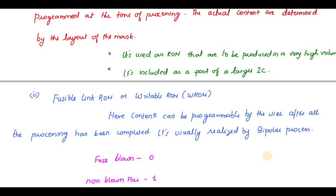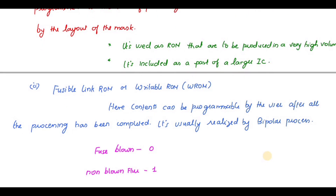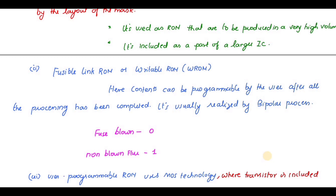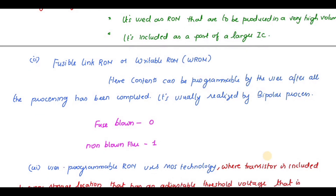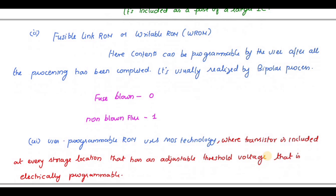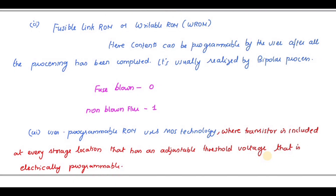Next is Fusible Link Read-Only Memory, also called WROM (Writeable Read-Only Memory). Here the contents can be programmed by the user after all the processing has been completed. It is usually realized by the bipolar process, that is BJT. If the fuse is blown, it stores zero; if it is non-blown, it stores one.